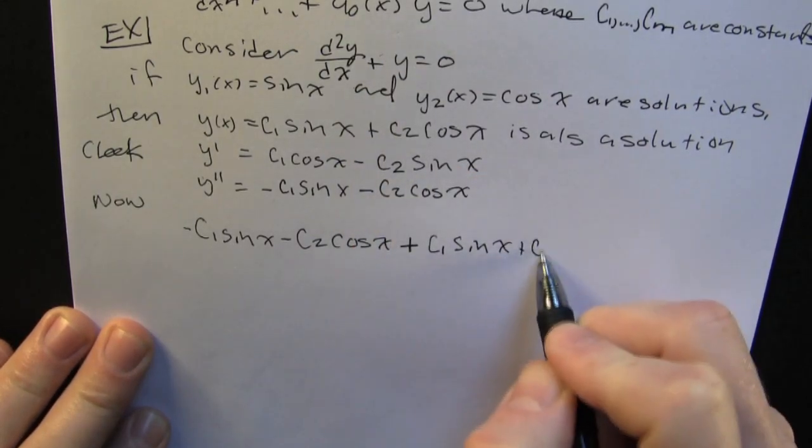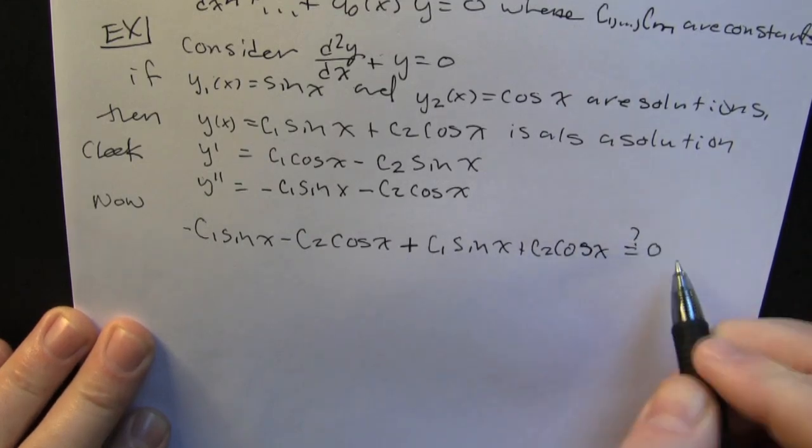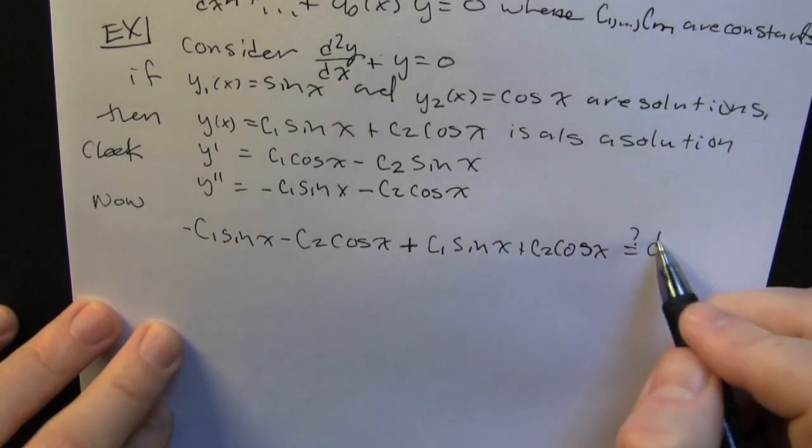We plug that in, y double prime, or two primes. That's minus c1 sine minus c2 cosine, and then plus... oh jeez, look, it worked!